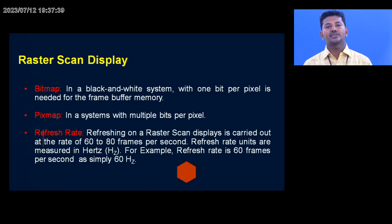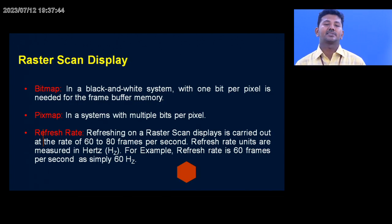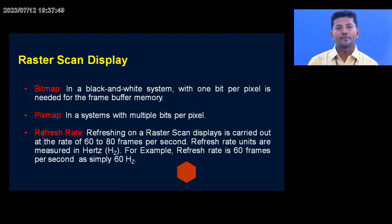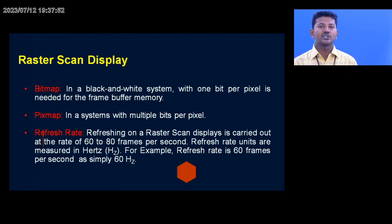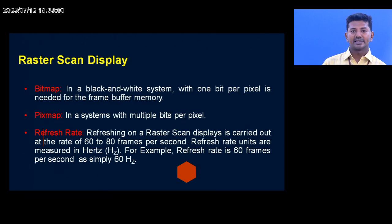A pixmap is for an individual pixel where multiple bits are stored — that is called pixmap, and it is used in color monitors. The refresh rate of the raster scan display is 60 to 80 frames per second, and the refresh rate is measured in hertz.